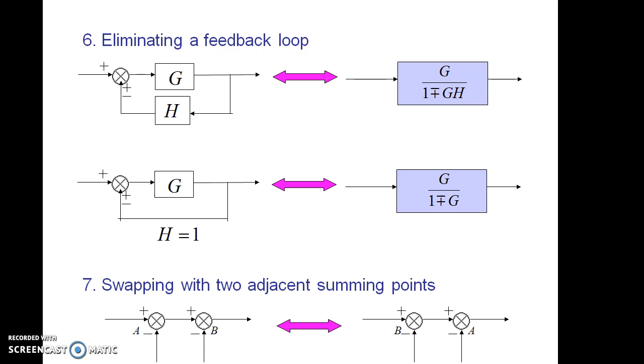The seventh rule is swapping with two adjacent summing points. In this, if there is no take-off point in between two summing points, it does not have any difference in swapping the summing points.